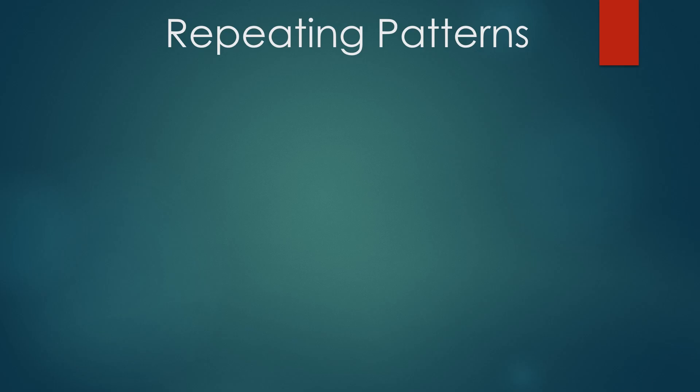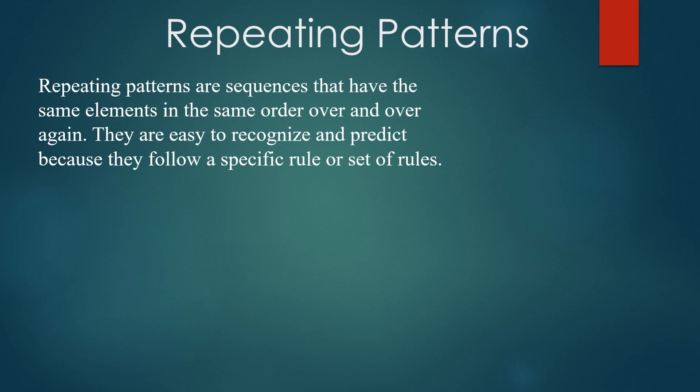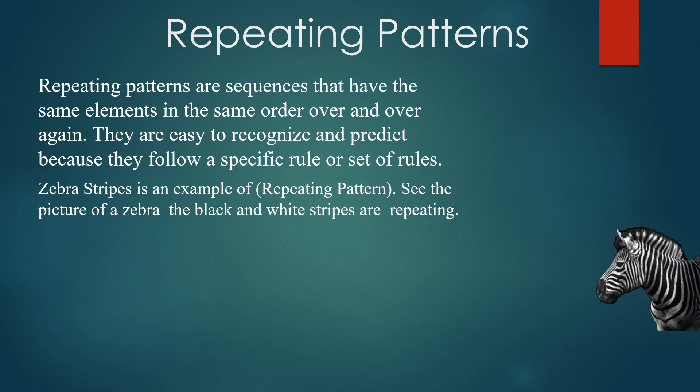What are repeating patterns? Repeating patterns are sequences that have the same elements in the same order over and over again. They are easy to recognize and predict because they follow a specific rule or set of rules. A zebra stripe is an example of a repeating pattern. See the picture of the zebra.